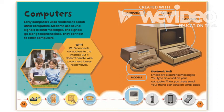Electronic mail: Emails are electronic messages. You type an email in your computer, then press send. Your friend can send an email back. On this computer there's a modem, computer, screen, and keyboard. It has the same features as a computer we might use today, but it's definitely a lot bigger and doesn't look like something you may have at home.